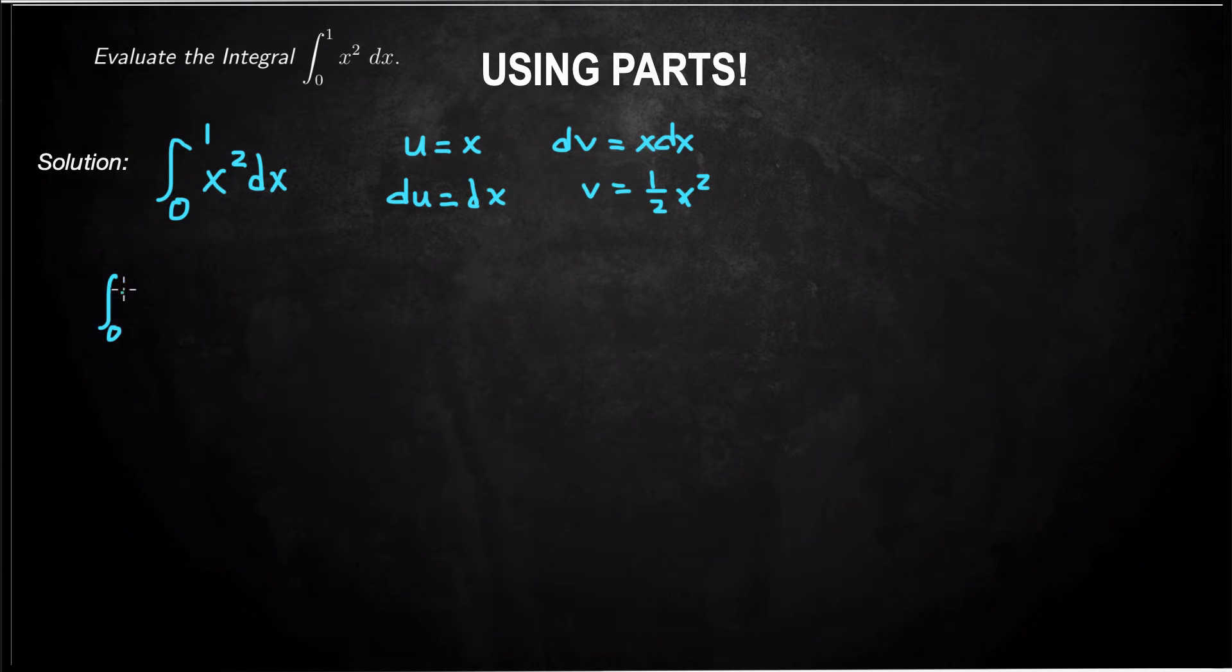The integral from 0 to 1 of x squared dx using integration by parts is going to be 1 half x cubed from 0 to 1 minus the integral from 0 to 1 of 1 half x squared dx.